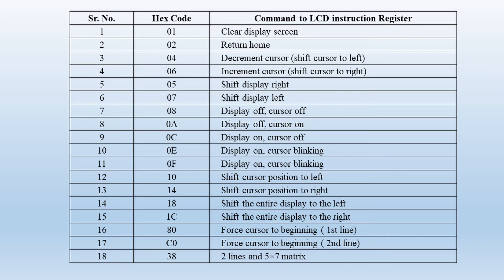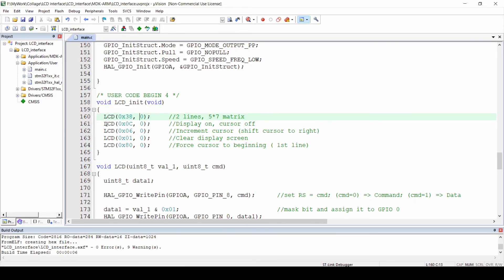We can modify the 0x0C instruction to blink the cursor by changing it to 0x0E. The next instruction is 0x06, which increments the cursor to the next position to the right. The instruction 0x01 clears the display screen, wiping out all characters. The instruction 0x08 is for positioning the cursor. We've already worked with cursor positioning, so let's try the other commands — let's change 0x0C to 0x0E to blink the cursor.